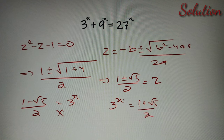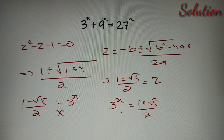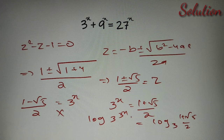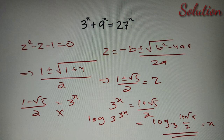We have the value of 3 raised to the power x as (1 plus root 5) divided by 2, but we need to find x only. So we take log base 3 on both sides. We get log base 3 of (3 raised to the power x) on the left, and log base 3 of ((1 plus root 5) divided by 2) on the right. Since log base a of (a raised to the power x) equals x, the value of x is log base 3 of ((1 plus root 5) divided by 2), and this is the only solution for our given equation 3^x + 9^x = 27^x.